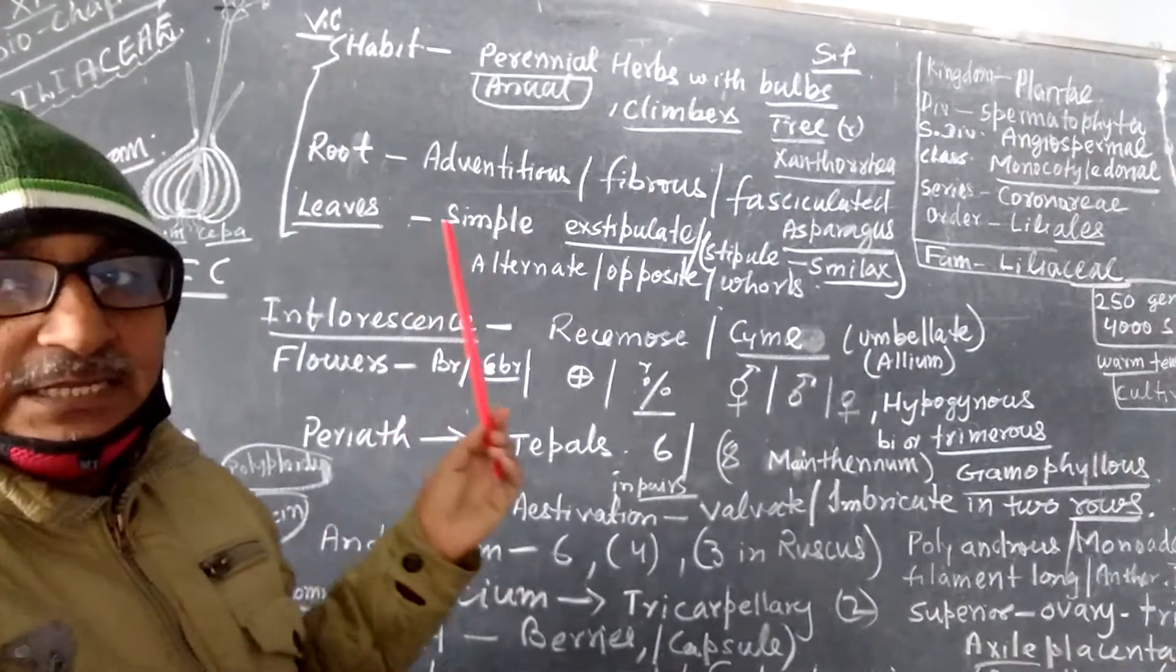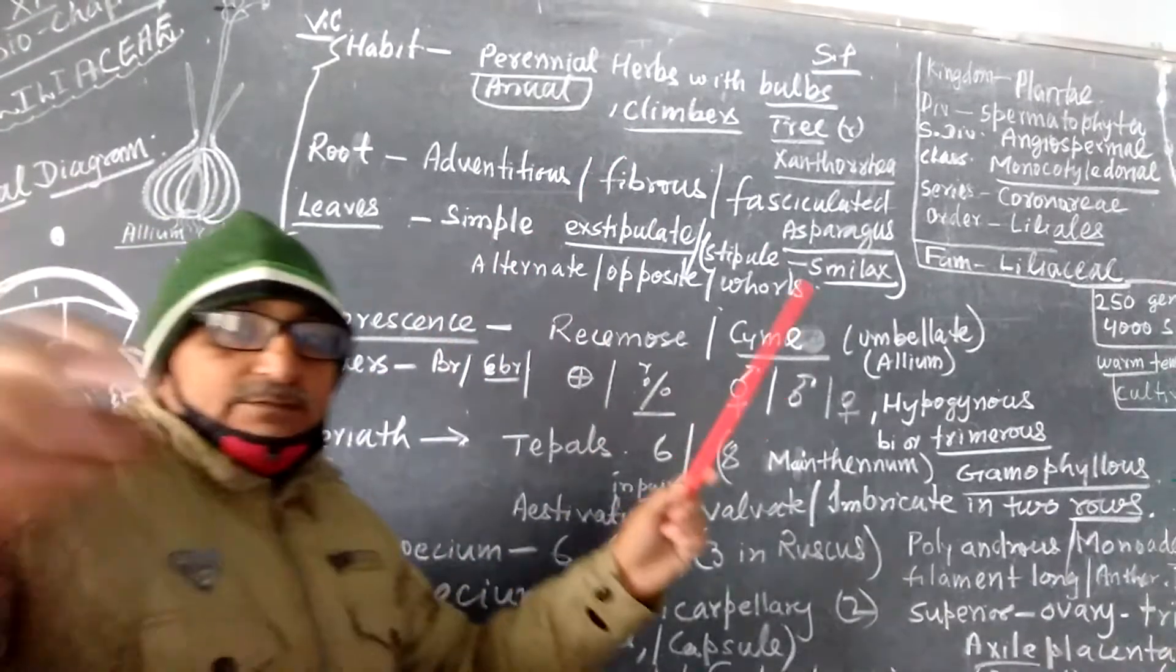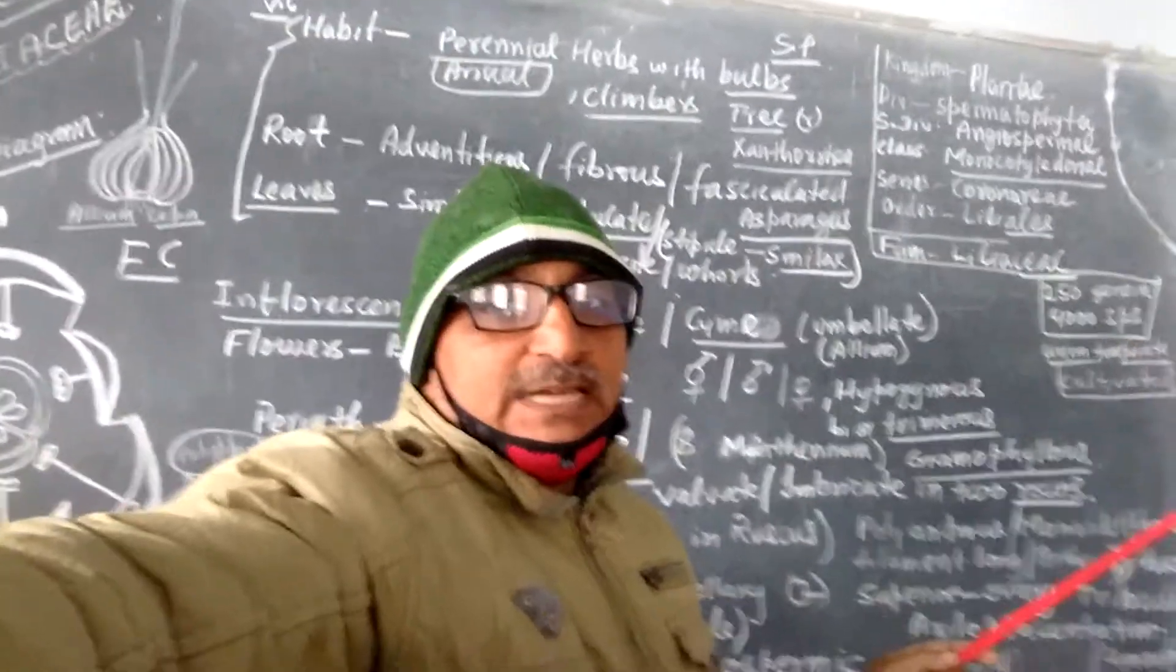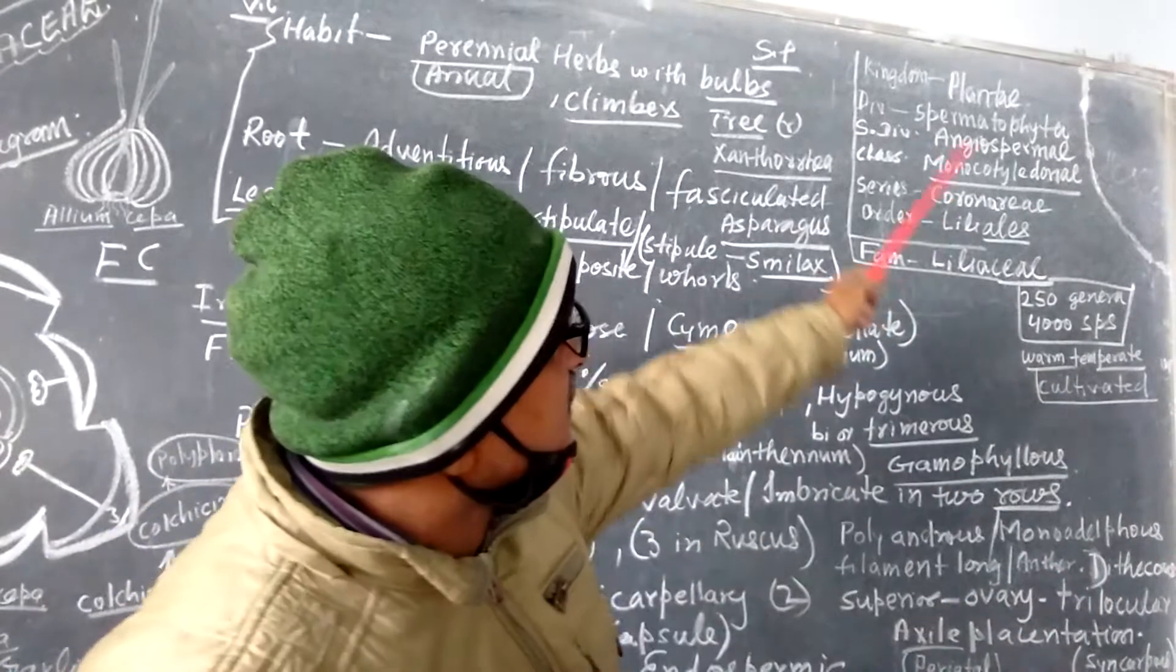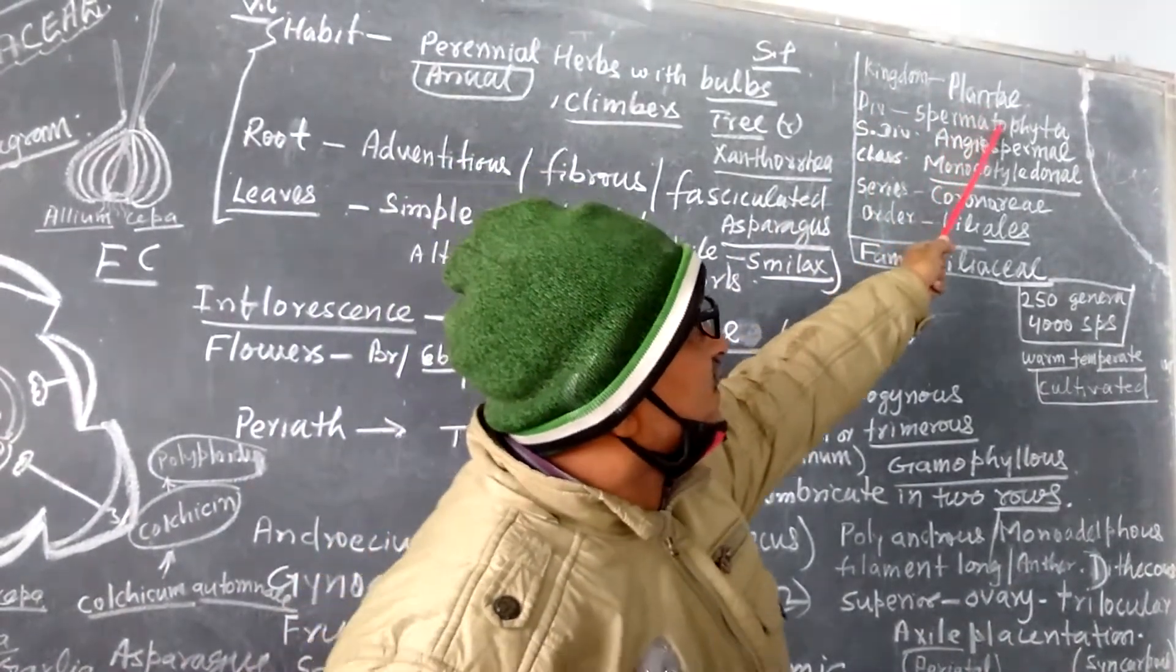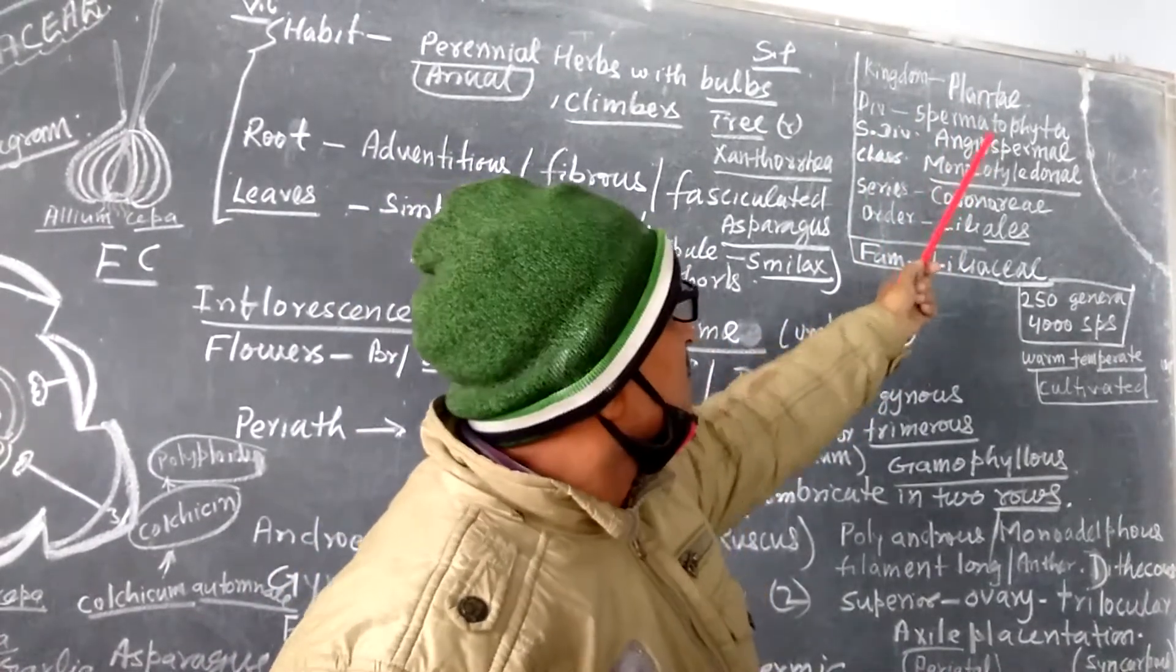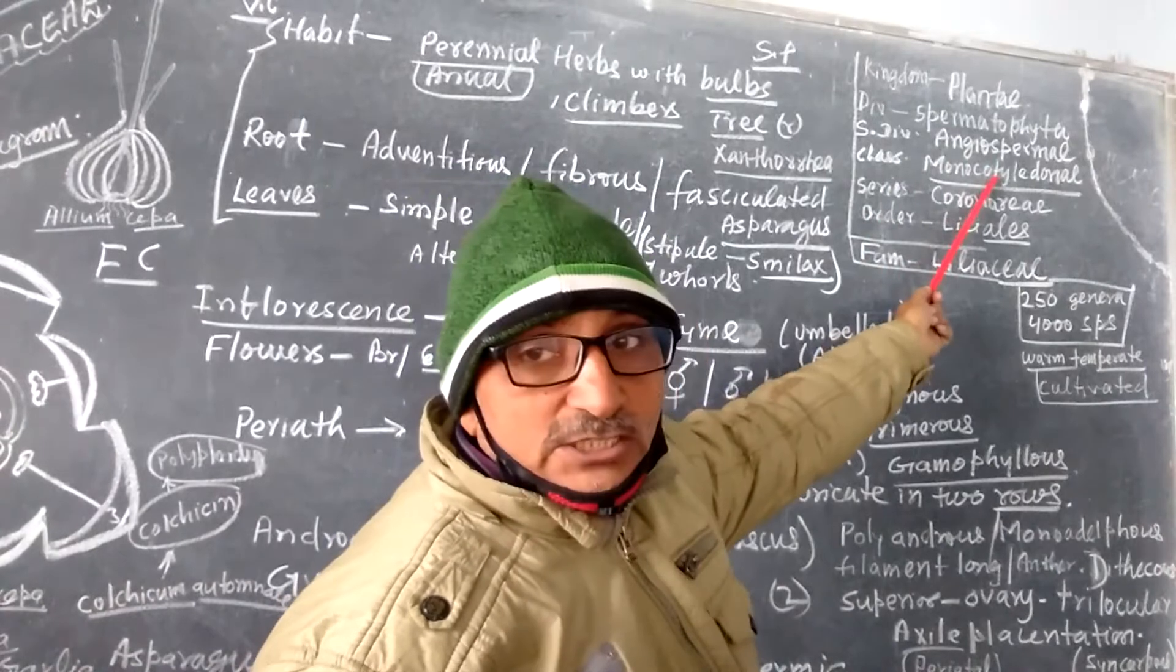Niliasi family, also known as Dili family. When we talk about its systematic position, this family has kingdom Plantae, division Espermatophyta, subdivision Angiospermae, class Monocotyledon.